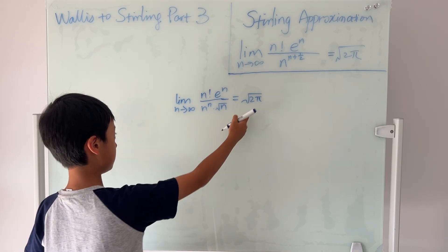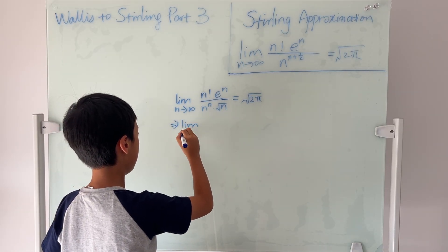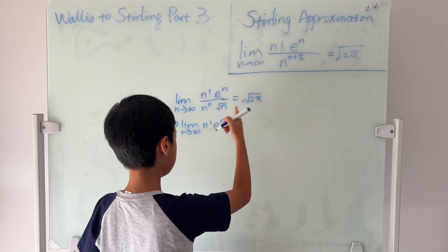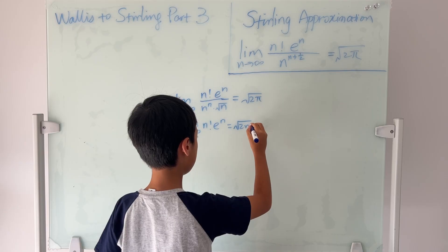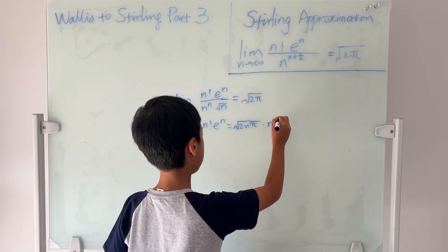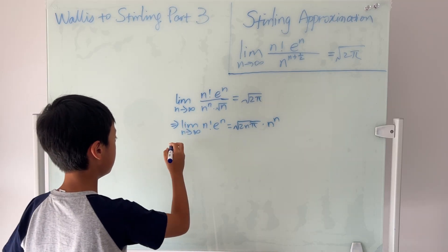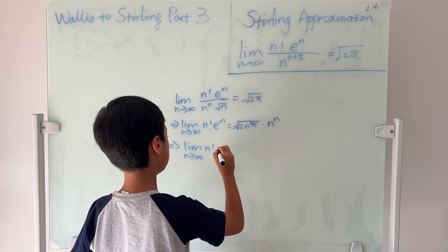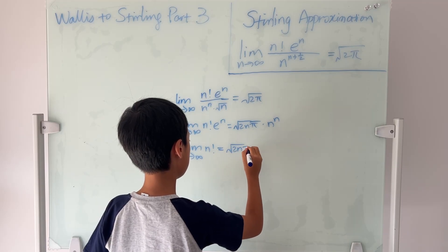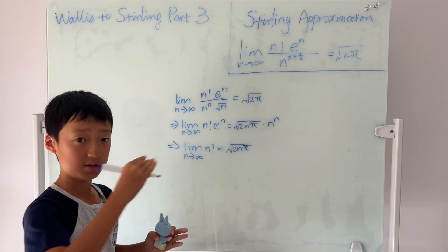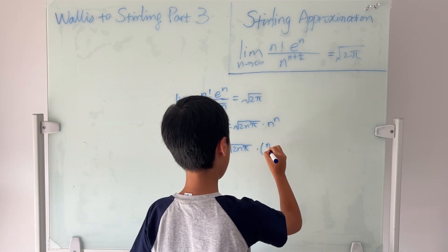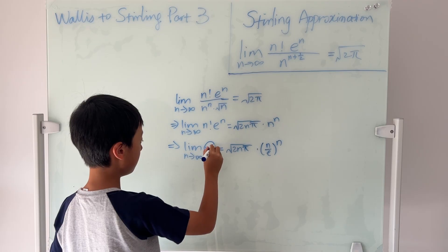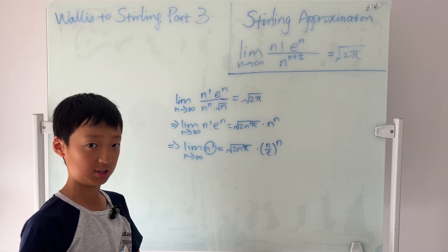We can multiply these two together. So the limit as n goes to infinity of n factorial times e over n is equal to the square root of n times the square root of 2π, which is the square root of 2nπ, times n to the power of n. Now we divide by e to the power of n. So we get the limit as n goes to infinity of n factorial equals this, and n to the power of n over e to the power of n is equal to (n/e) to the power of n. This formula is super useful, as we can approximate any factorial, and it's widely used in engineering and mechanics.